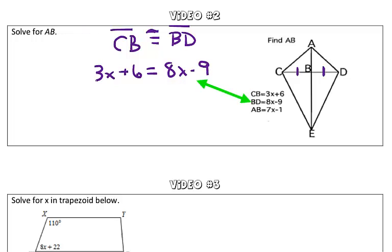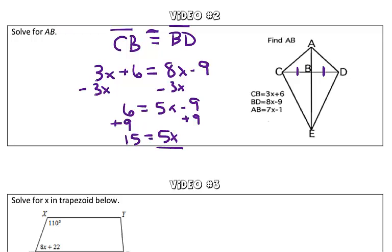To solve this, we'll use inverse operations. Subtract 3x from both sides: 6 equals 5x minus 9. Add 9 to both sides: 15 equals 5x. To get x by itself, divide both sides by 5. So x equals 3.